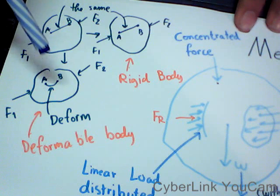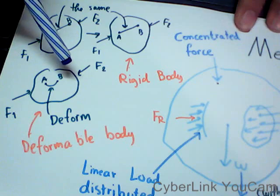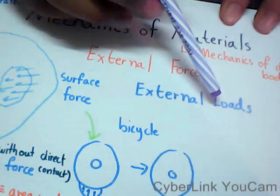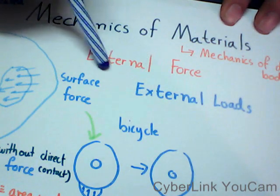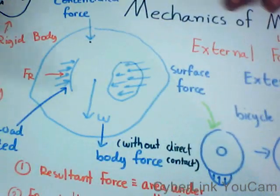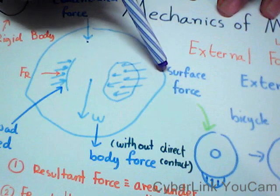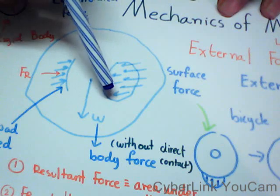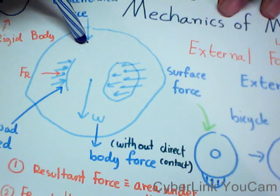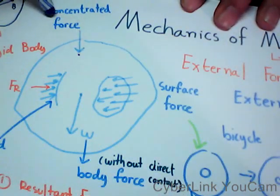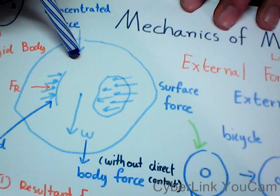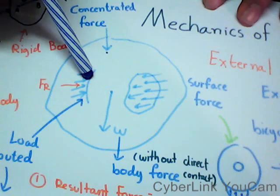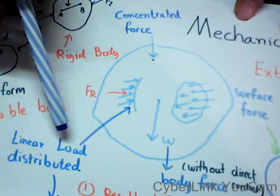Before we continue, let's review some concepts about force. The first type is external force or external loads. There are several types of external force. The first is surface force — a force that is applied over an area. If we reduce it to a point, the force acts on a point and we call it a concentrated force or point load. If we have a force that acts along a line, we call it a distributed load.